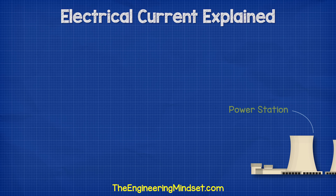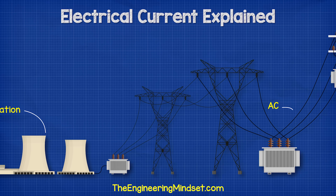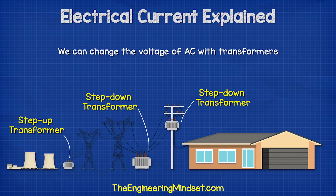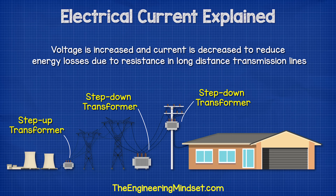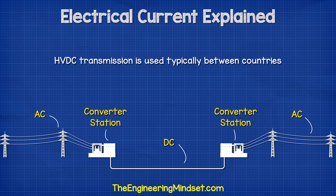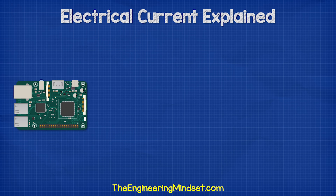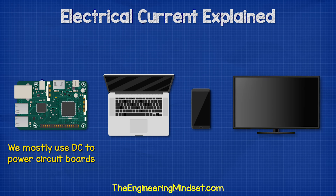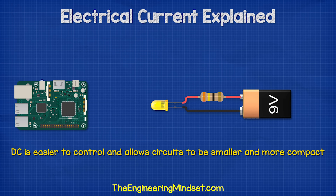In most cases, we transport electricity from a power station to the towns and cities using AC electricity, because it's easy to increase and decrease the voltage using transformers, and it's also very efficient to transport electricity over long distances using this method. However, there are a few high voltage DC transmission lines being used, but we won't go too much into detail on those. We mostly use DC direct current for the circuit boards of small electronic devices like laptops, mobile phones and TVs, because DC is easier to control and allows circuits to be smaller and more compact.